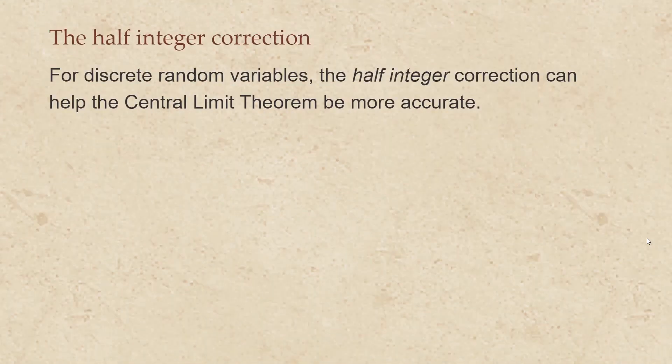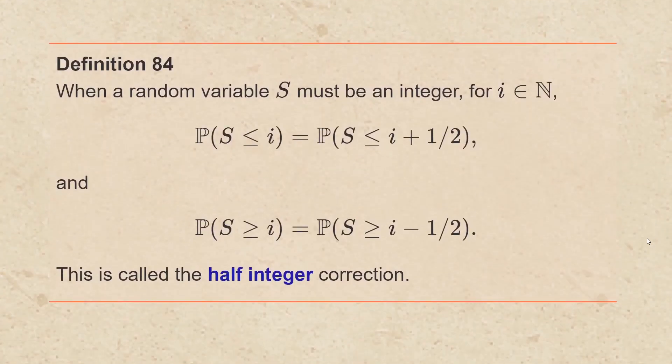For discrete random variables, it turns out that the half integer correction can help the central limit theorem be more accurate. When a random variable s must be an integer, for any natural integer i, the probability that s is less than or equal to i is the same as the probability that s is less than or equal to i plus one half. And the probability that s is greater than or equal to i is the probability that s is greater than or equal to i minus one half. This is called the half integer correction.